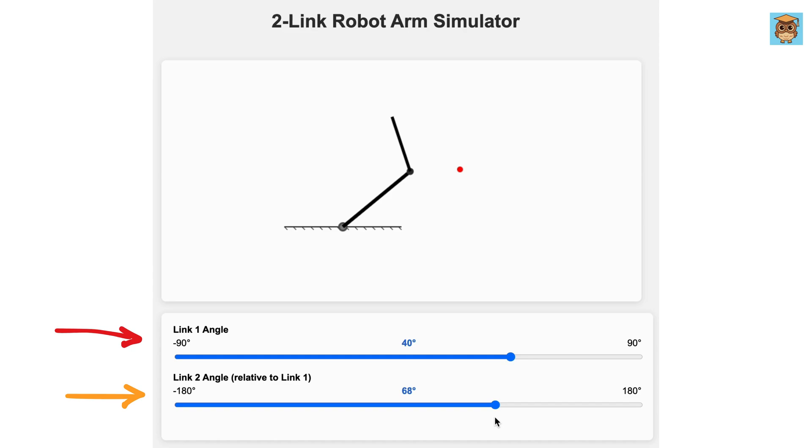Now just by using some hit and trial we can see that for this case the orientation of links will be somewhat like this where theta one is 48 degrees and theta two is minus 55 degrees. Negative sign indicates the clockwise direction of link two with respect to link one. So this will be 55 degrees.